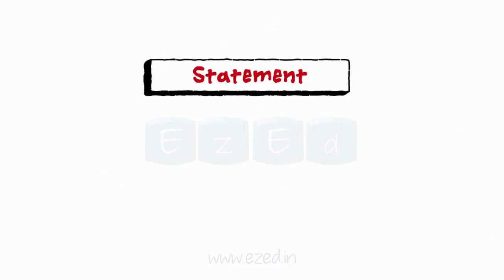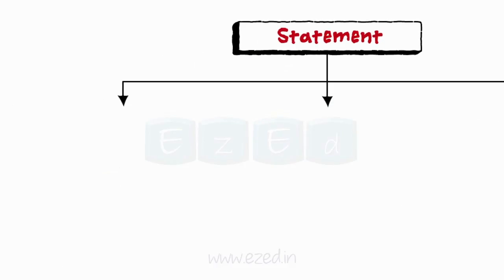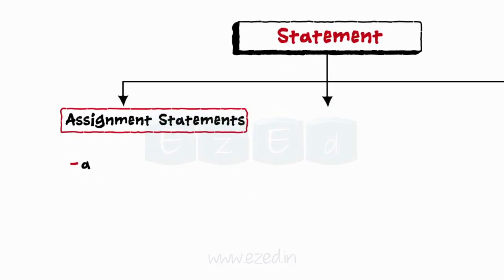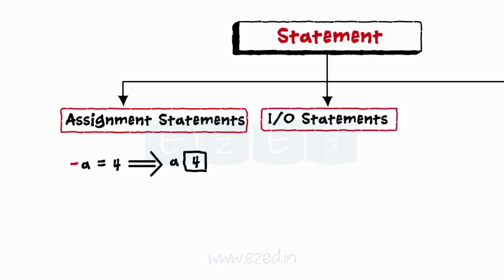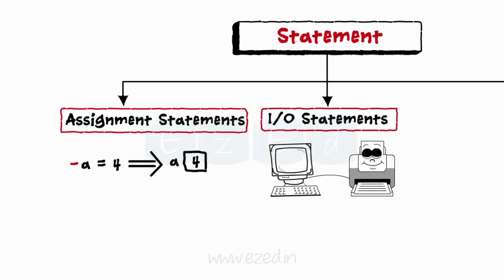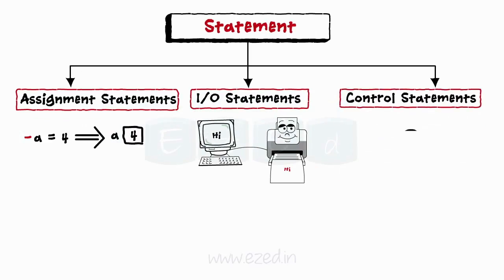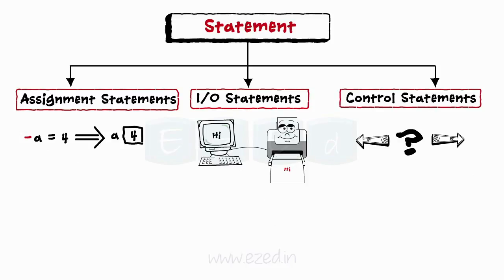Statements fall into the following general types: assignment statements, where values are stored in variables; input-output statements, where data is written or printed out; and control statements, through which the program takes a decision about what to do next.